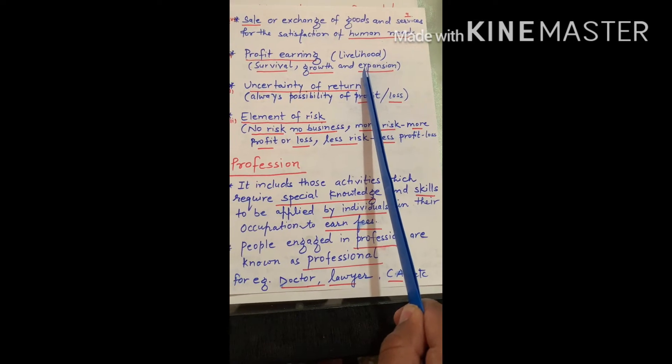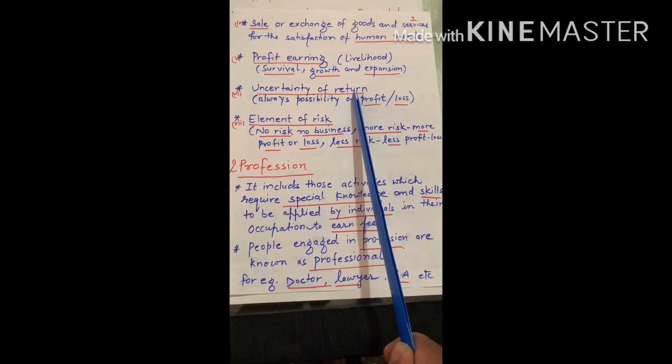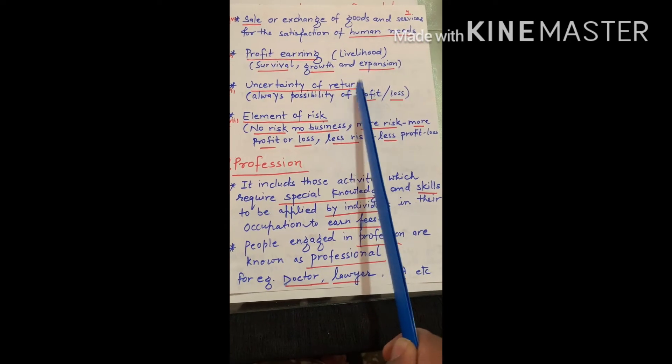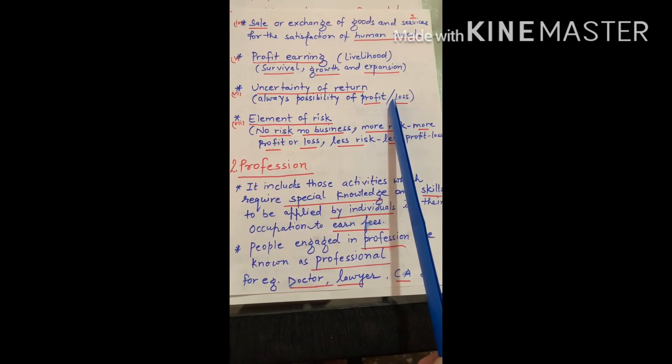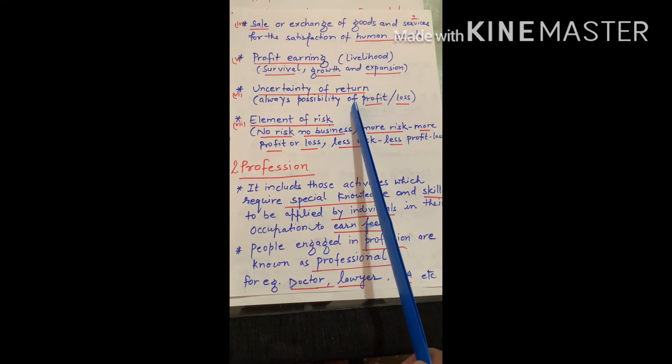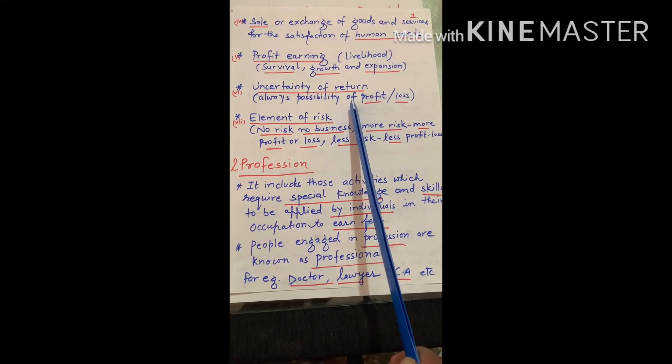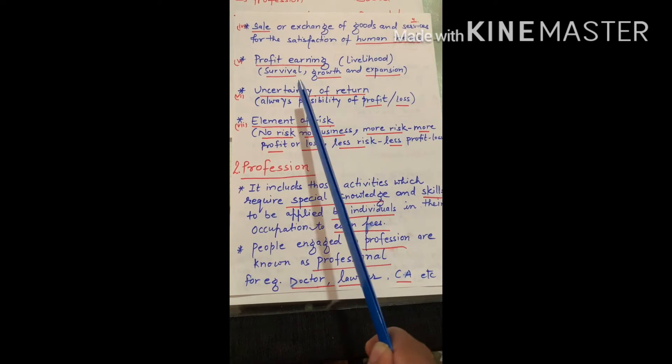Business is always done for future. And future is uncertain. And there is always possibility of profit or loss. Don't think that if this year your company has 5 lakh profit, the next year will also have 5 lakh profit. The profit can be more or less. Return is uncertain.